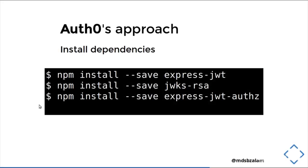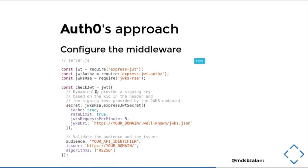Let us now look at Auth0's approach of securing an API. We will require a few dependencies: one is expressjwt, jwks-rsa, and expressjwt-auths — these are the packages we will require. Let us configure the middleware. We are going to create a middleware called checkjwt, and it requires the packages and has information of your domain.